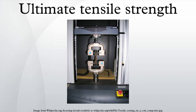Tensile strength is defined as a stress, which is measured as force per unit area. For some non-homogeneous materials it can be reported just as a force or as a force per unit width. In the SI system, the unit is the Pascal, using the mega prefix — equivalently, Newtons per square meter. A United States customary unit is pounds force per square inch, or kilo pounds per square inch, which is equal to 1000 psi. Kilo pounds per square inch are commonly used when measuring tensile strengths.